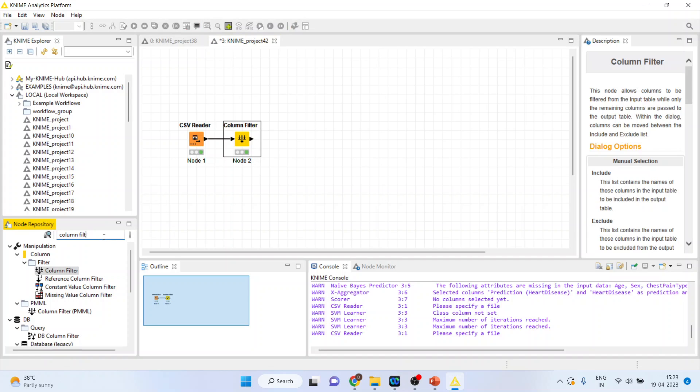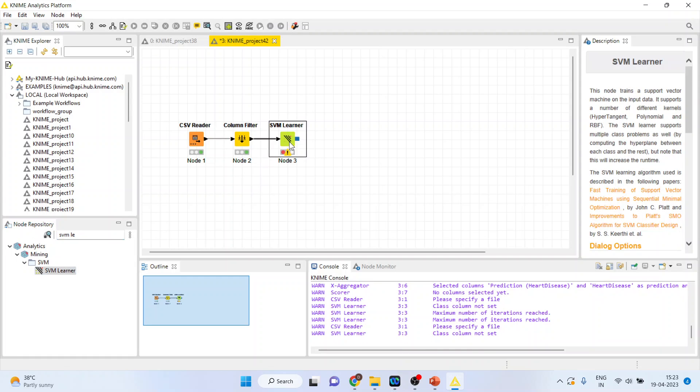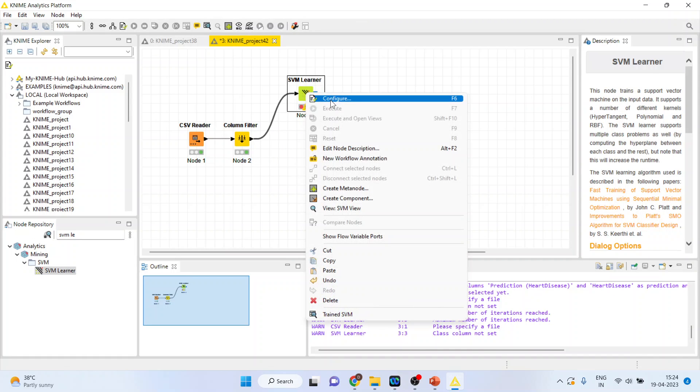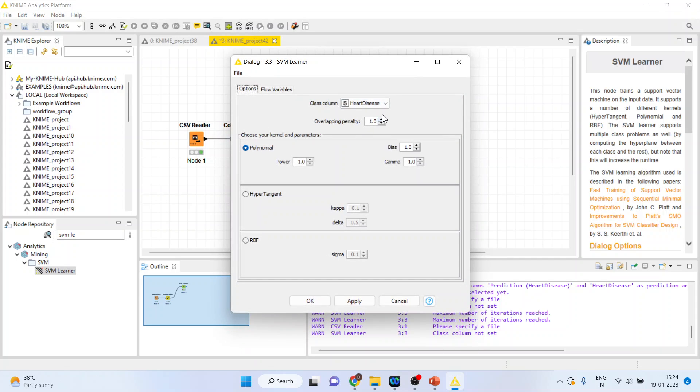Now activate the SVM Learner. I will request all my viewers to kindly refer to my previous video so that you can understand the flow of this tutorial. Configure. Make sure that heart disease is our target variable. Don't change any default settings. These settings are for the kernels. If you want to segregate the two planes in high dimension, then only you should go for polynomial, hyperbolic tangent, or radial basis function. Click OK.